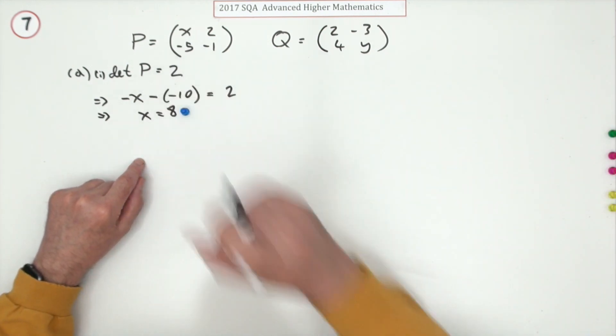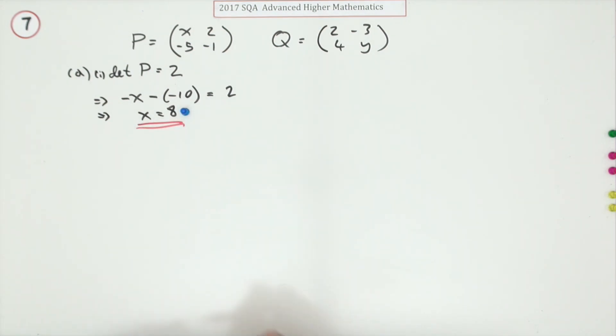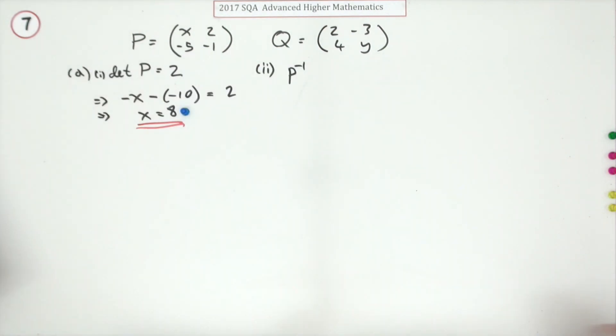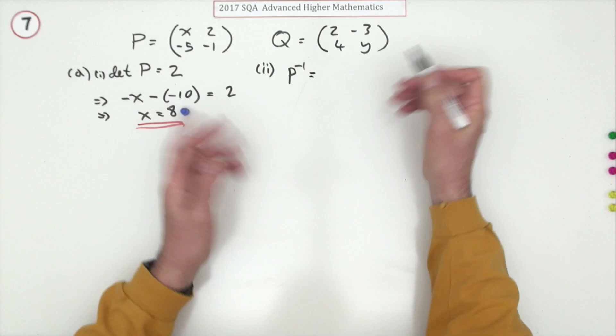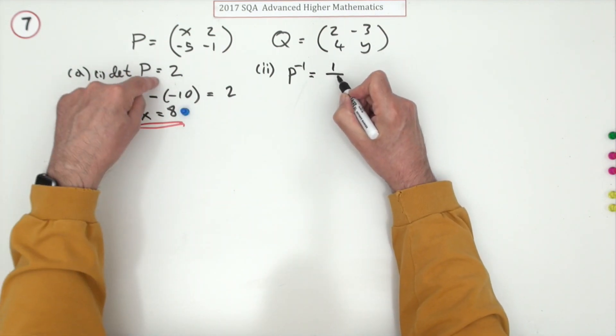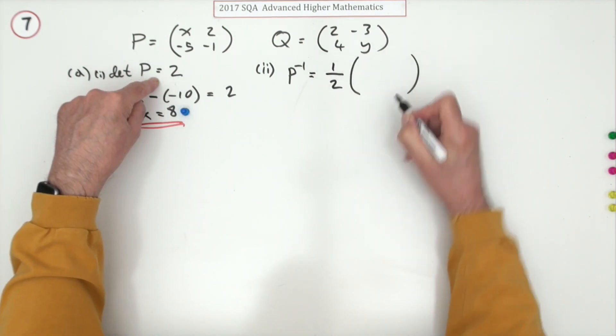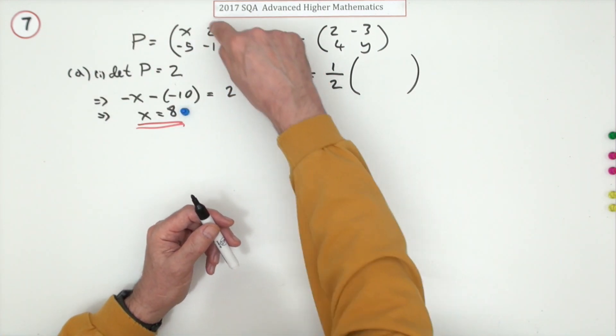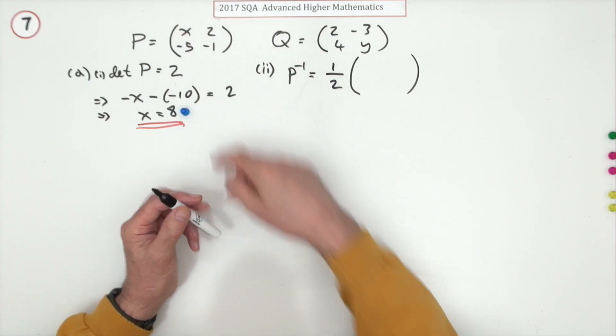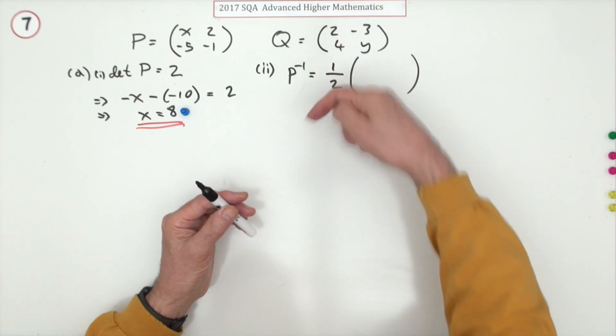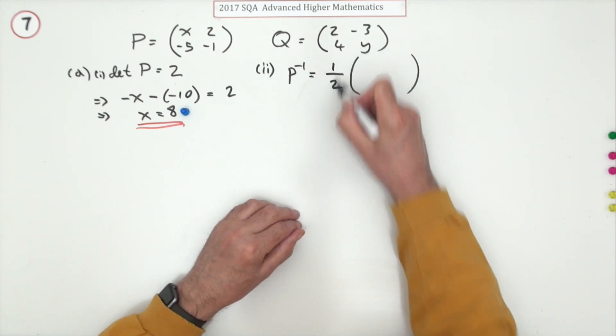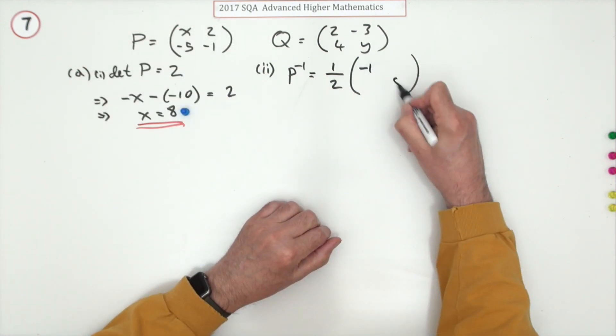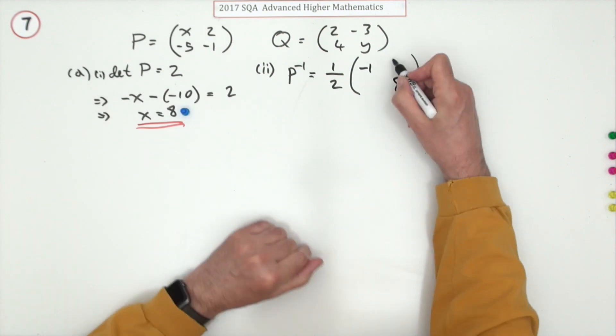The second part, just for one mark: what's the inverse of P? Well, the inverse of P is... there's a pattern you learn for that. It's one over the determinant, which you know is two, and then you move these terms about. It actually comes from replacing each element by its signed minor, then transpose it, and finally divide by the determinant. You'll just learn it as: divide by the determinant, reverse the main diagonal, remembering that's now an eight so it's negative one eight, and flip the signs on the other diagonal.